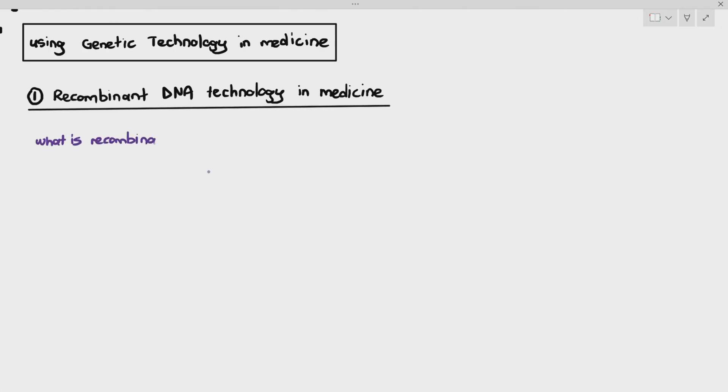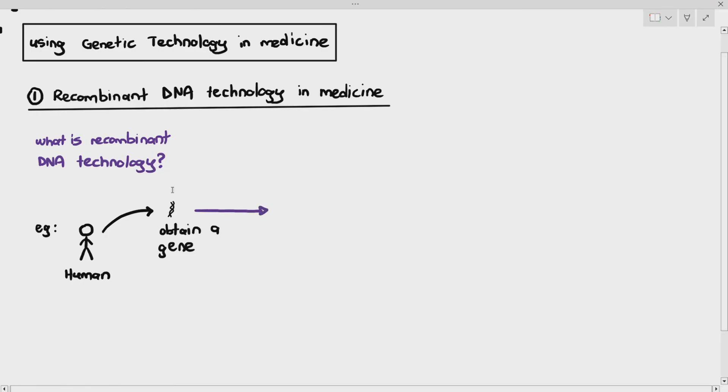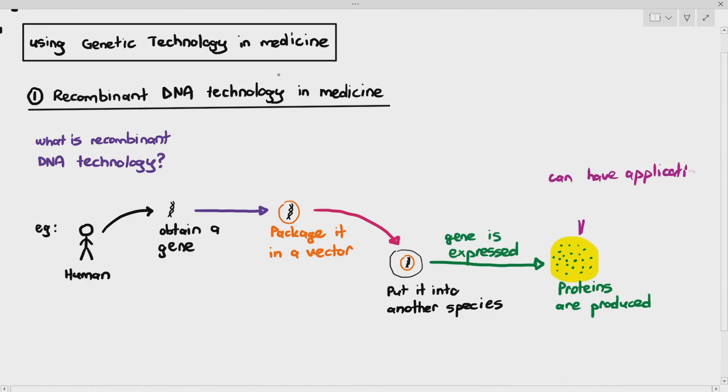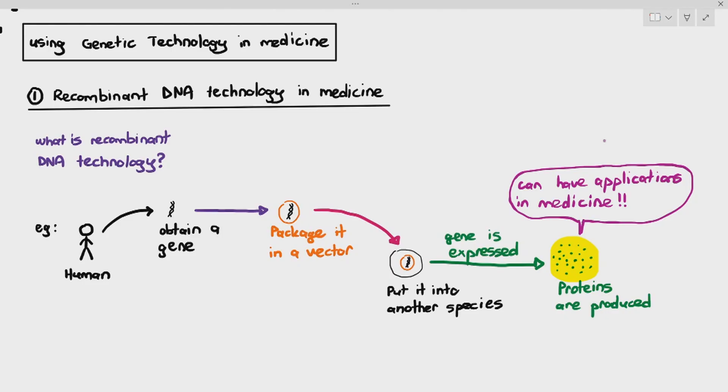So remember, recombinant DNA technology just involves us taking out a gene normally from a human. We will put the gene into a vector. A vector can be plasmids, liposomes, or even viruses. And we put the vector and the gene into another species. What does that species do? That species will express the gene and produce the protein. Now depending on the type of protein it produces, we can use those proteins in medicine to treat diseases, to cure certain diseases, to manage sickness.